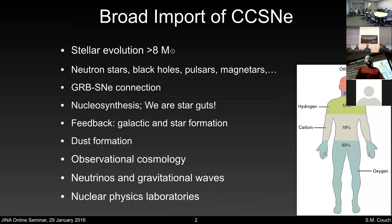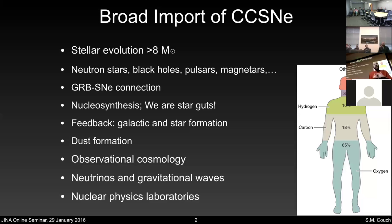Why should we care about understanding the theoretical supernova process? It's the end state of all stars above about 8 to 10 solar masses. If we want to understand stellar evolution, we ought to understand supernovae and why stars blow up. They're the progenitor systems for neutron stars, black holes, pulsars, and magnetars. They're connected to long gamma ray bursts, and they're obviously very important for nucleosynthesis. By mass, our body is 65% oxygen, and that came almost entirely from massive core collapse supernovae.